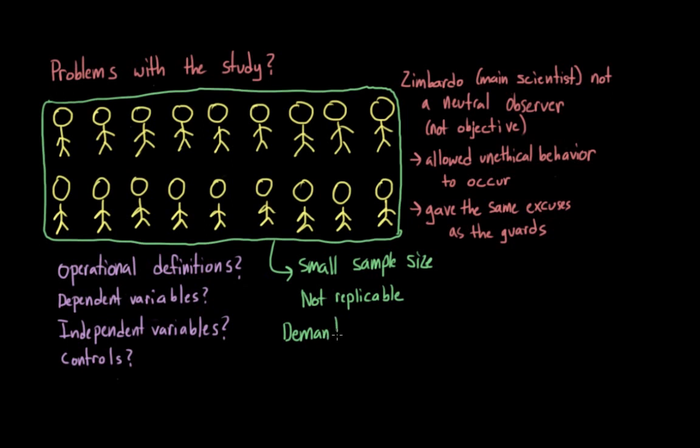The study is also a great example of how demand characteristics might influence the study. And this term refers to how much of the participants' behavior might have been influenced by how they thought the experimenters wanted them to behave, either consciously or unconsciously. And so it's possible that all of the participants in the study, at least on some level, were just acting the way that they thought that Zimbardo wanted them to act.